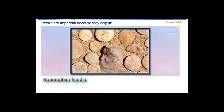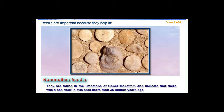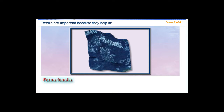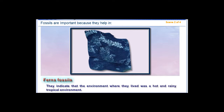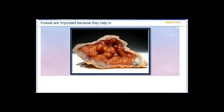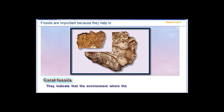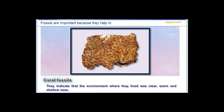Nymulids Fossils are found in the limestone of Gabal Muqattam and indicate that there was a sea floor in this area more than 35 million years ago. Fern Fossils indicate that the environment where they lived was a hot and rainy tropical environment. Coral Fossils indicate that the environment where they lived was clear, warm, and shallow seas.